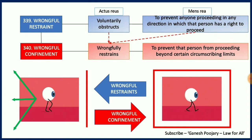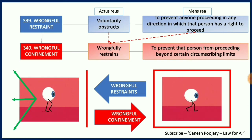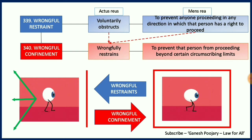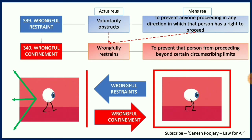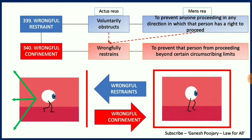That is what is defined under section 339, where somebody voluntarily obstructs to prevent anyone from proceeding in any direction in which that person has a right to proceed. He wants to go somewhere, he has the right to proceed, and somebody is blocking him — that is known as wrongful restraint. If you are not going to allow someone to go the side he wants to go, and you have the intention to prevent them, then it becomes wrongful restraint.